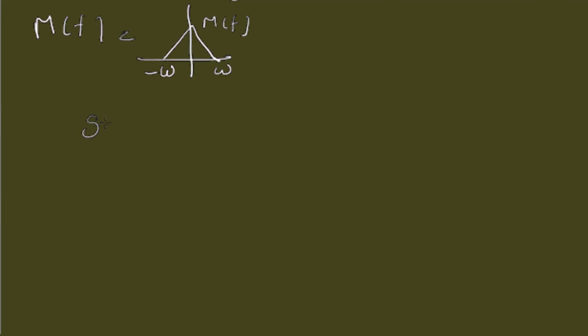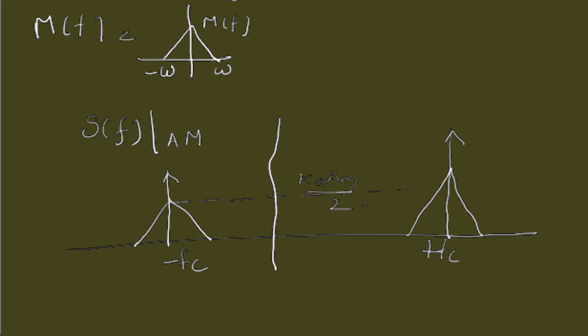Now, the spectrum of the modulated wave, which is here is, the original message signal spectrum will be shifted by plus fc units to the right side and minus fc units to the left side. And the amplitude of these peaks will be KA into AM by 2 and this is Ac by 2.